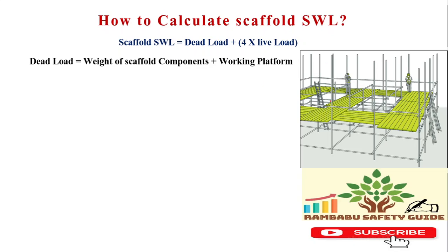This includes the pipe — how much weight is the pipe, how many planks, and so on. We will take out the dead load from these components. For this example, the dead load is taken as 125 kg. I will show you how much the weight is in the chart. First we will understand how to calculate SWL.